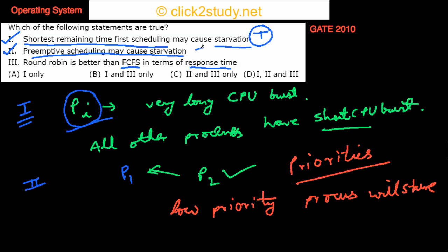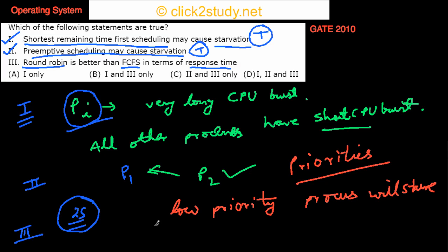So this second statement is true as well. Now what about the third thing — round robin is better than first come first serve in terms of response time? In round robin, you have many processes and you give them chunks of time. The first process runs for two seconds, then the next for two seconds, and so on — you repeat this cycle. In FCFS, the process that comes first takes the CPU and completes before the second process is allowed to run.